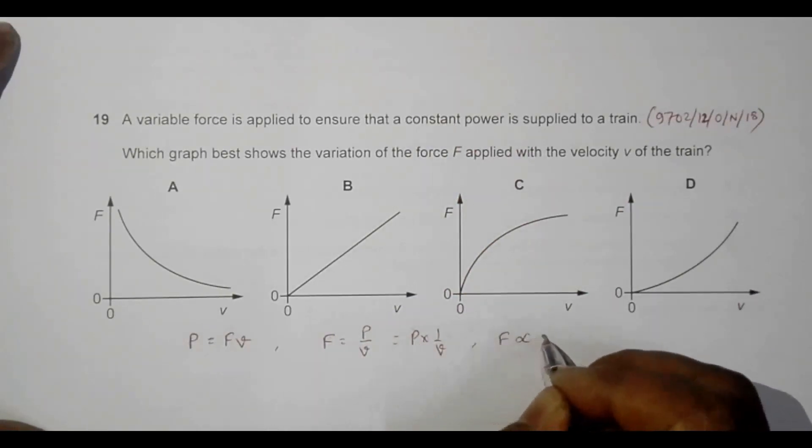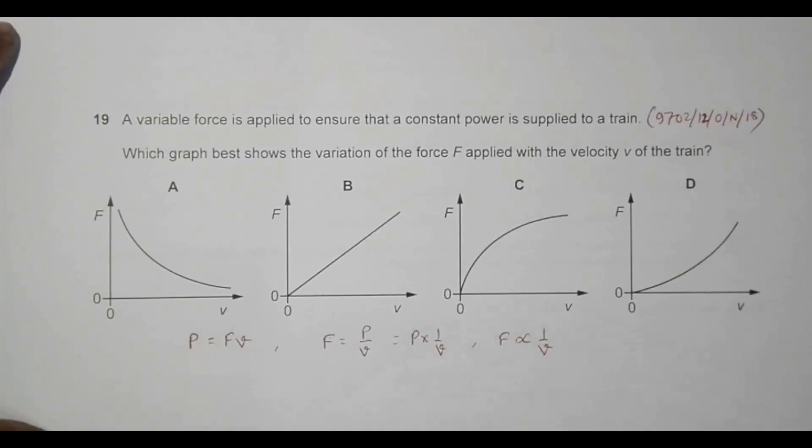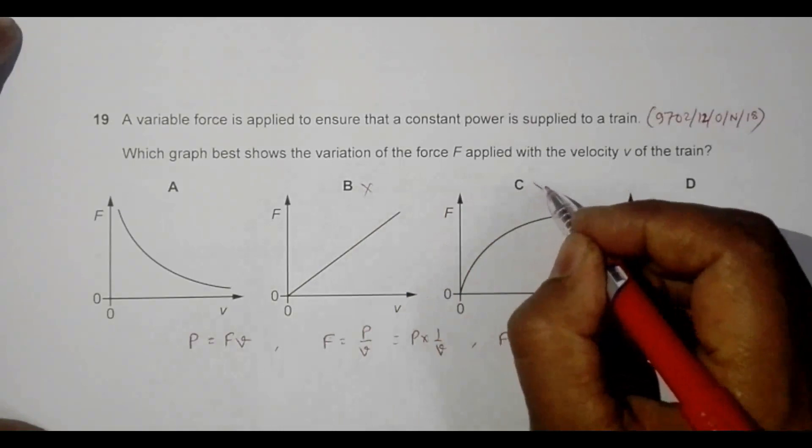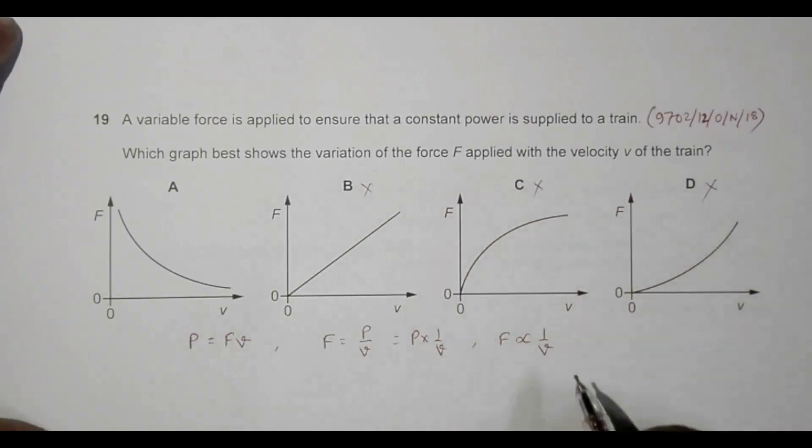If P is constant, that means the graph between them should be a hyperbolic graph. So this disqualifies, this also disqualifies, and this disqualifies.